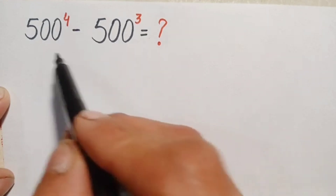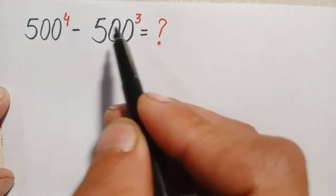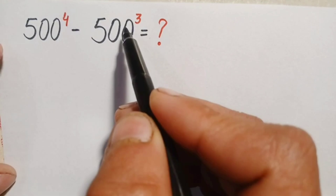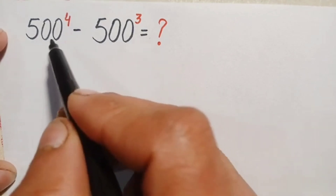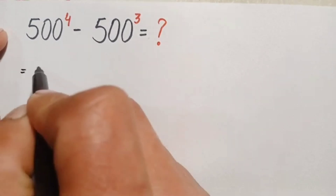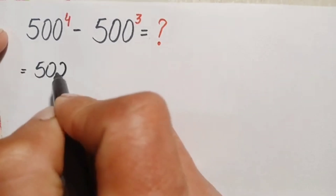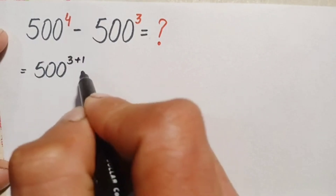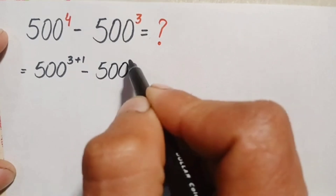We will try to make these two numbers the same by making their powers equal. We will change the power 4 to the sum of 3 plus 1, then use an exponential algebraic identity. Therefore we can write 500 raised to power 4 as 500 raised to power 3 plus 1, minus 500 raised to power 3.